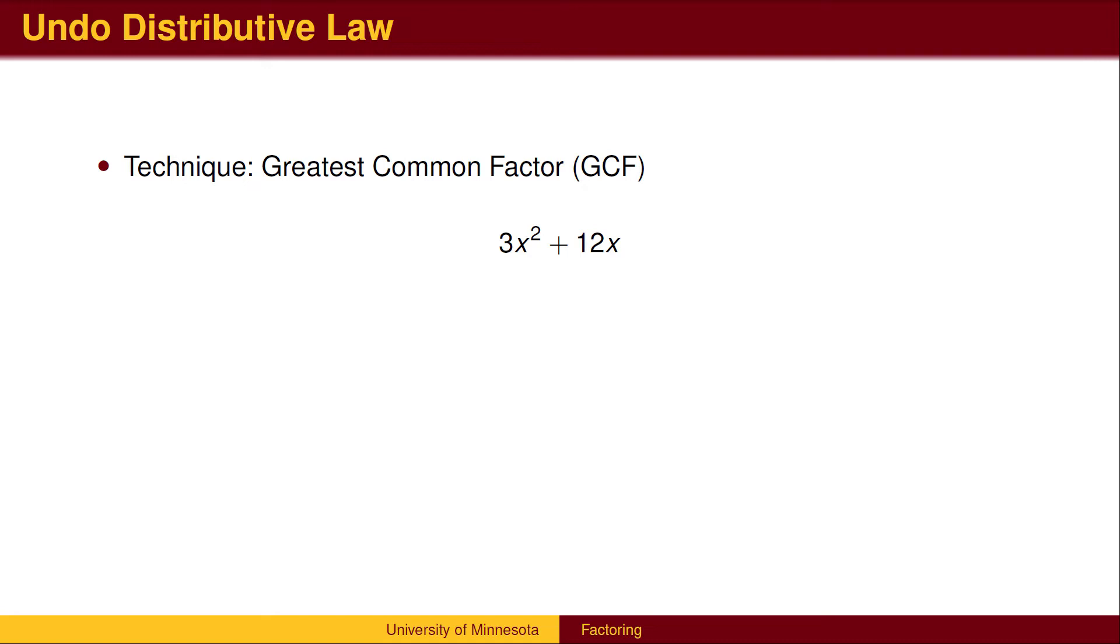The first technique is to factor out a greatest common factor. The distributive law multiplied a single term to a polynomial. We now wish to figure out what that single term was. We look for pieces that are common to both terms. We might have a factor of 2 in both terms. 12 is an even number, so 12x has a factor of 2, but 3x squared does not.